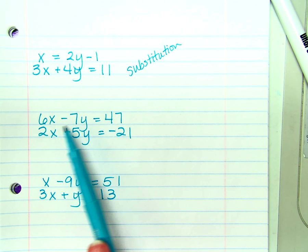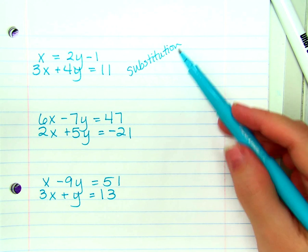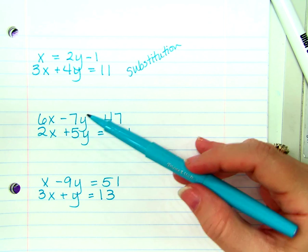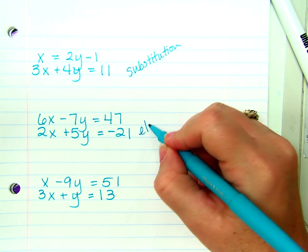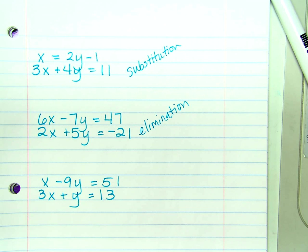Substitution or elimination. None of these variables are by themselves. None of them are alone or none of them have a coefficient of 1. So, elimination is probably the best choice instead of substitution because it would be quite difficult to solve for one of these variables by itself. I would choose elimination.